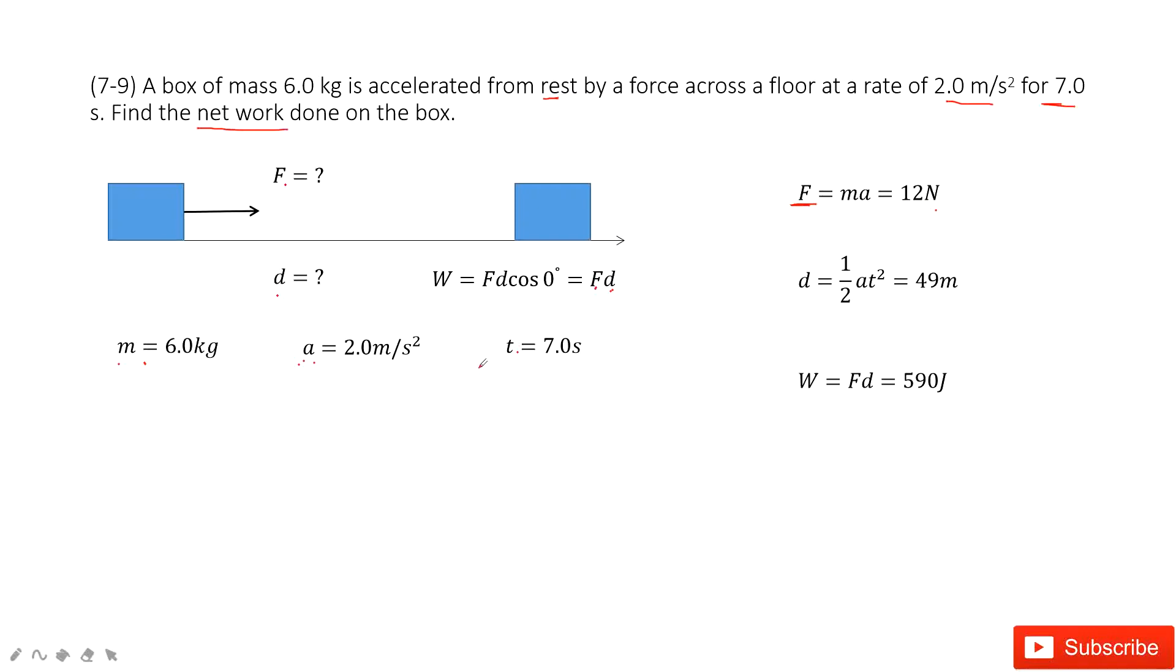The next one, can we find the distance it covered? Sure. Because we know initially the velocity is zero, acceleration is given, and t is given. So this distance becomes one half at squared, and that's 49 meters.